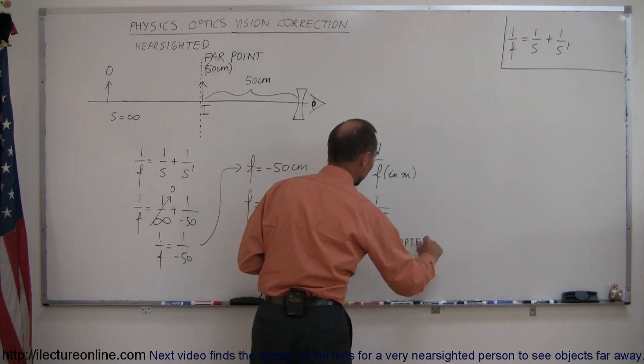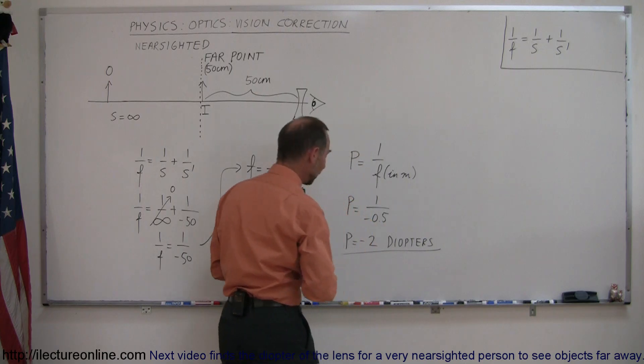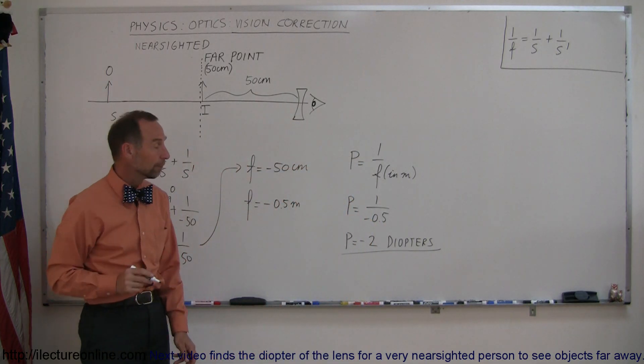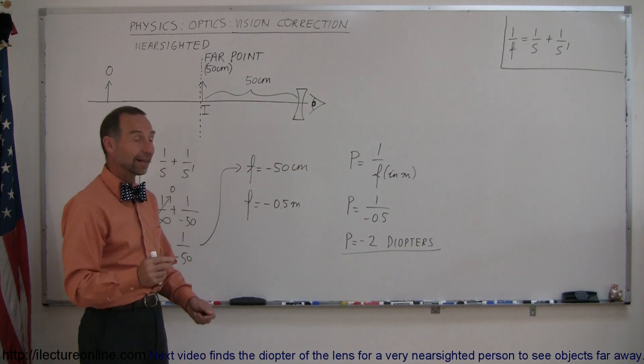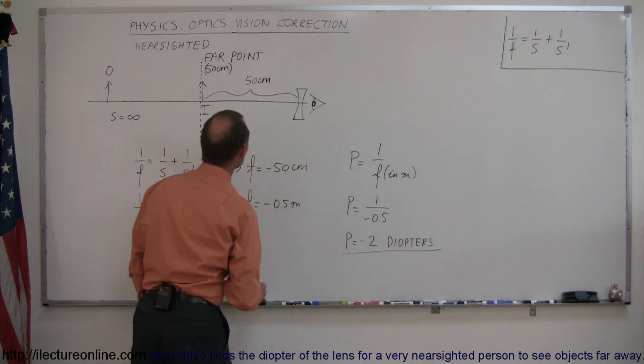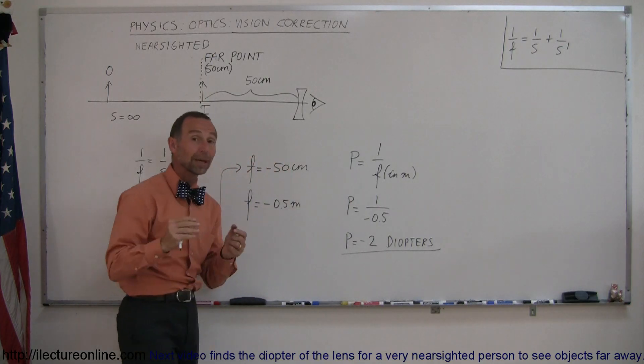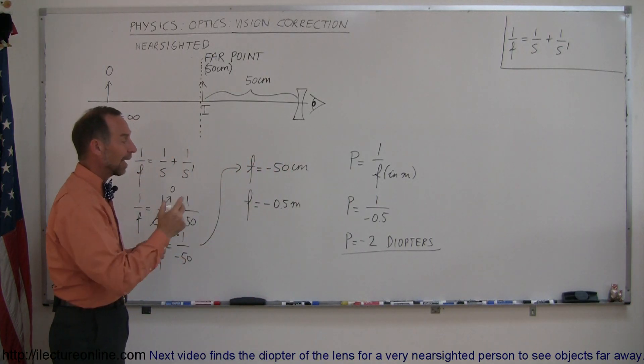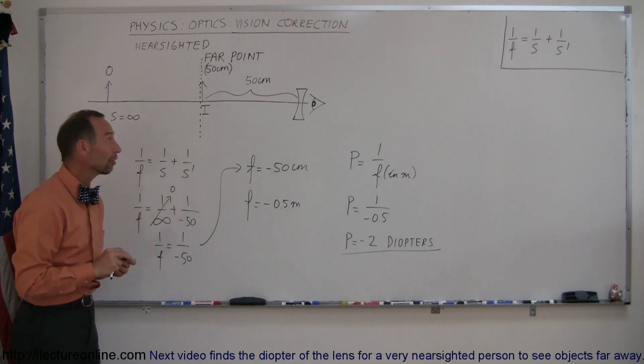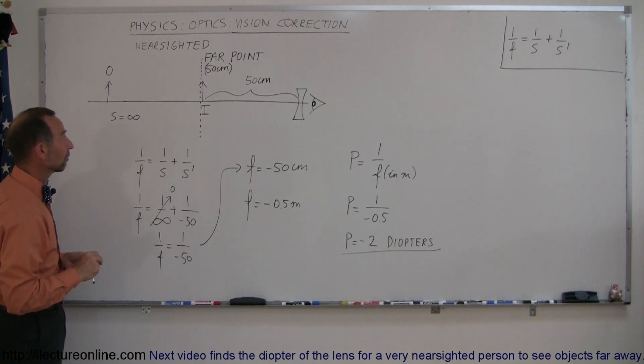So you can go to a store like Walmart or any place like that, any drugstore, and find glasses that are labeled as a minus 2. And if your far point is 50 centimeters and you put those glasses on, you'll be able to see things clearly when you look at things that are far away. So that's how you do your vision correction if your far point is at 50 centimeters.